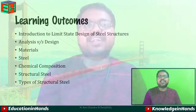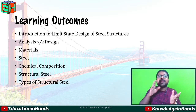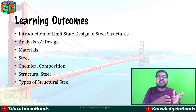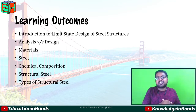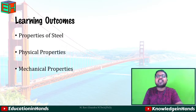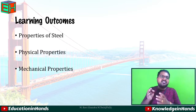In our last video, we learned about the introduction to limit state design of steel structures, the difference between analysis and design, what materials we use in design, steel and its chemical composition, and different types of structural steel. Now, in this class, let us learn about the properties of steel — specifically the physical properties and mechanical properties of steel.